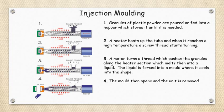In the first step, granules of plastic are poured or fed into the hopper which stores them until needed. In the second step, a heater heats up the tube and when it reaches a high temperature a screw thread starts turning. There are two types of injection molding machine: the first type uses a piston and cylinder arrangement to push the powder from the hopper to the heating zone, while modified machines use a lead screw arrangement which forwards the granules from hopper to the heating zone and then to the nozzle.